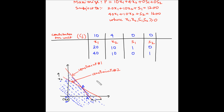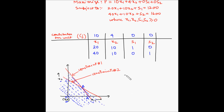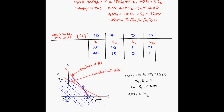Now we know the values of x1 and x2, let's find out the values of S1 and S2. Our first constraint is 20x1 + 10x2 + S1 = 1200. Putting x1 and x2 both equal to 0, we get S1 = 1200. For the second constraint, 40x1 + 10x2 + S2 = 1600. With x1 and x2 equal to 0, S2 becomes 1600. So both our slack variables have the maximum value.